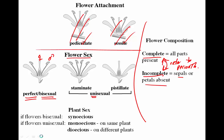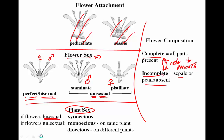We can also have unisexual flowers — 'uni' meaning one. If a flower has only stamens, it's staminate; if it's on the female side, it's pistillate. So flowers are either perfect, staminate, or pistillate. We can also talk about the sex of the plant, not just the sex of the flowers. If we have bisexual flowers, we say the plant is synoecious — 'syn' meaning with or together, 'oecious' meaning house.